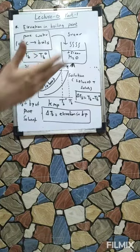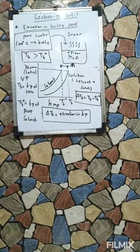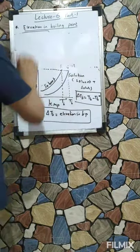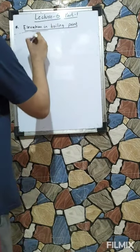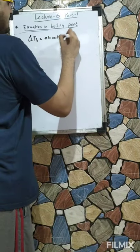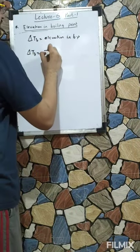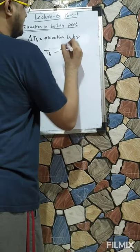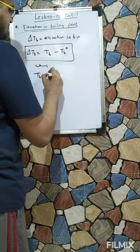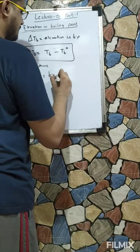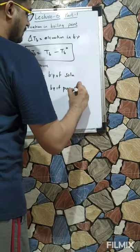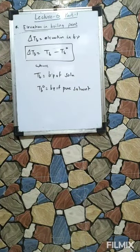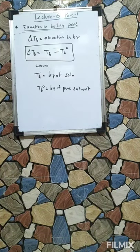Obviously there is an elevation — an increase — in boiling point. Delta Tb is the elevation in boiling point. Delta Tb equals Tb minus Tb°, where Tb is the boiling point of solution containing non-volatile solute and Tb° is the boiling point of pure solvent.